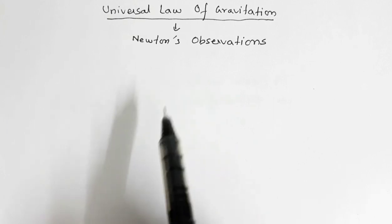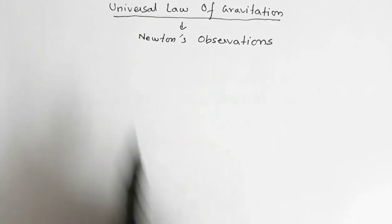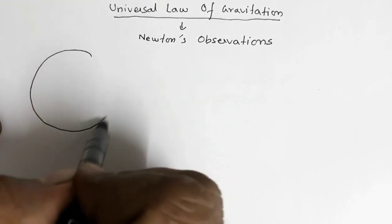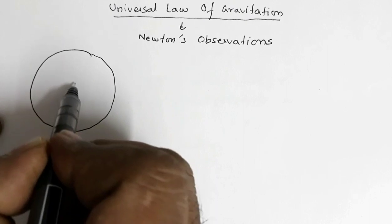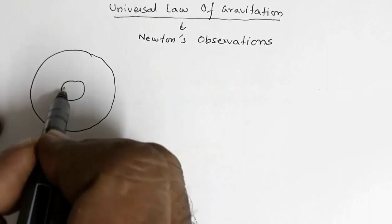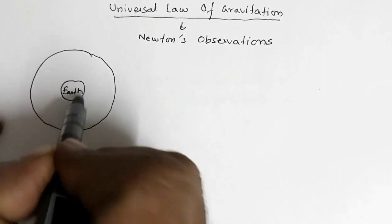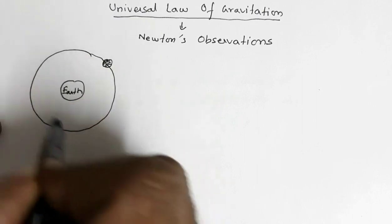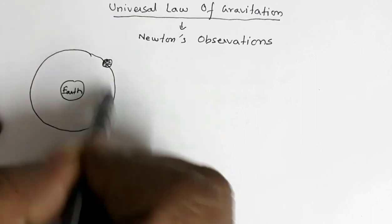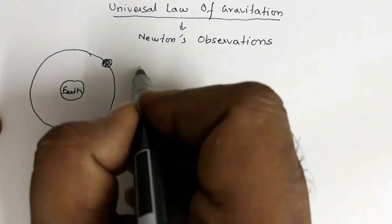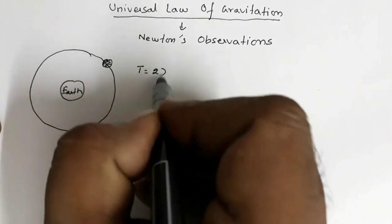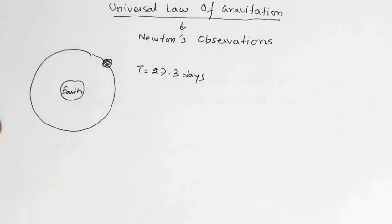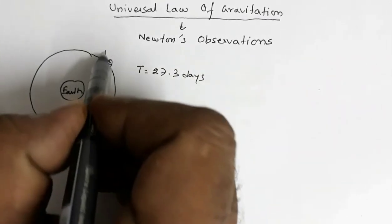Newton observed that the moon is revolving around the Earth in a circular path. If this is the Earth and this is the moon, the moon is revolving around the Earth in a circular path with a period of around 27.3 days. This is the period of revolution of the moon.